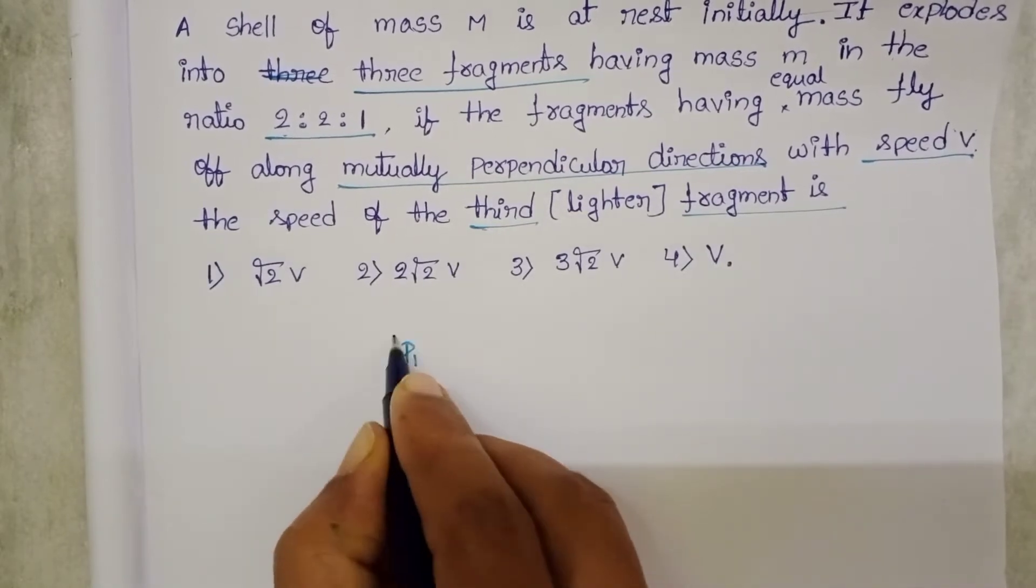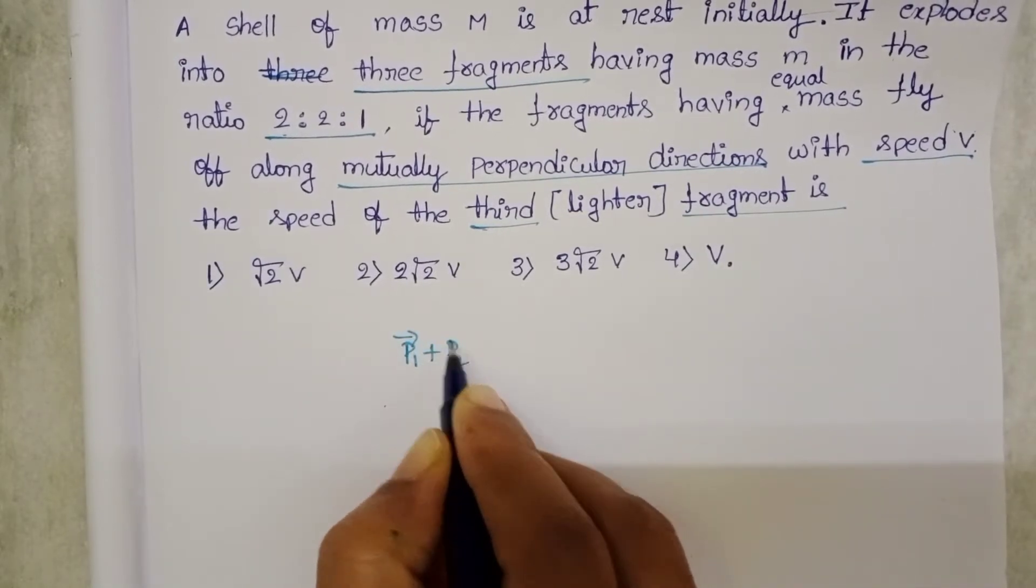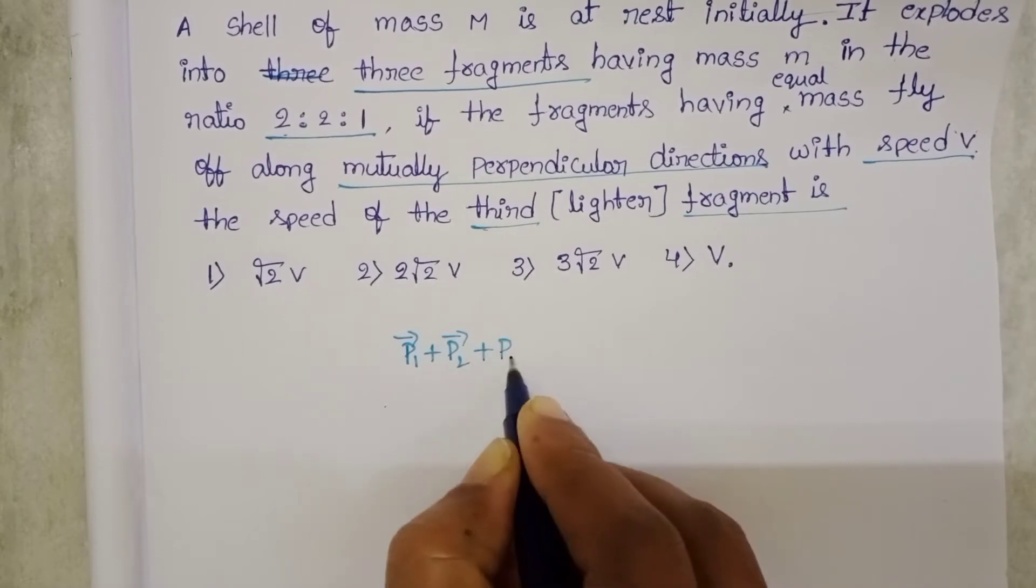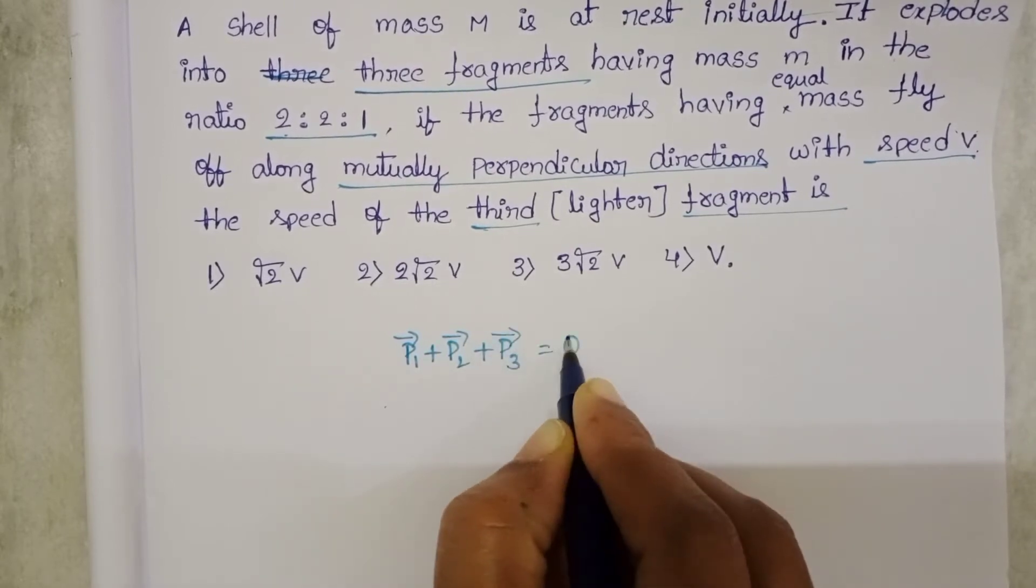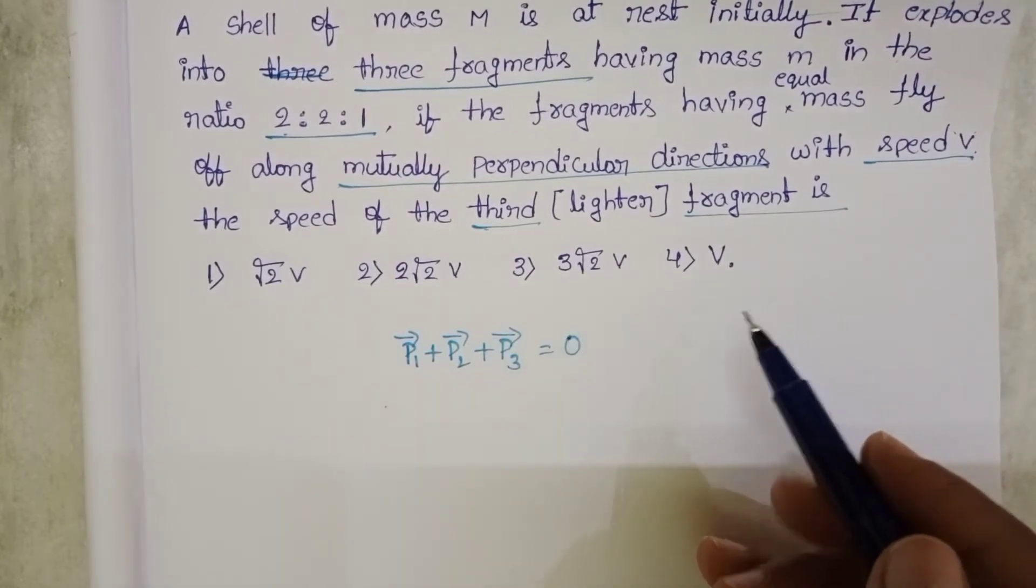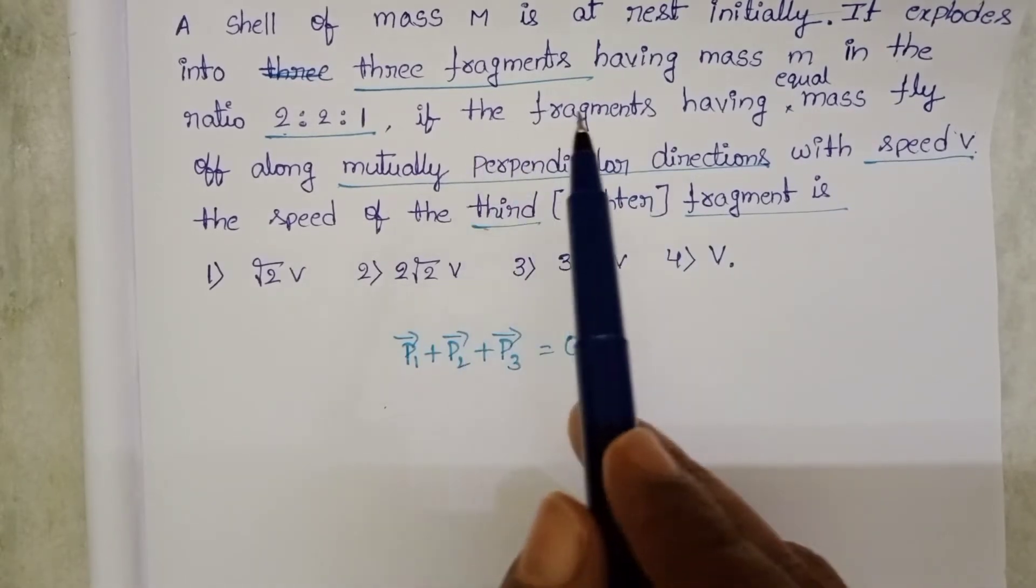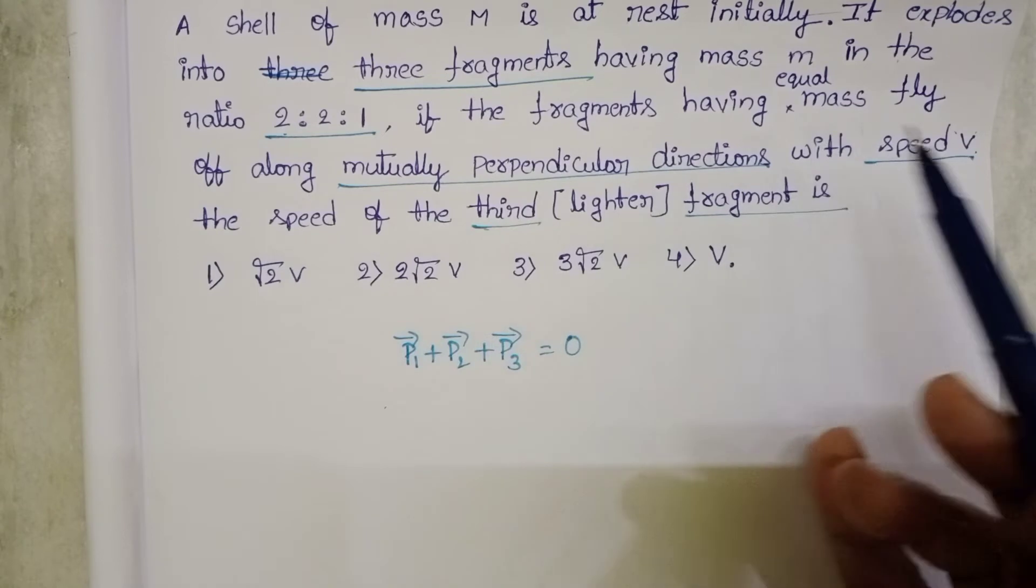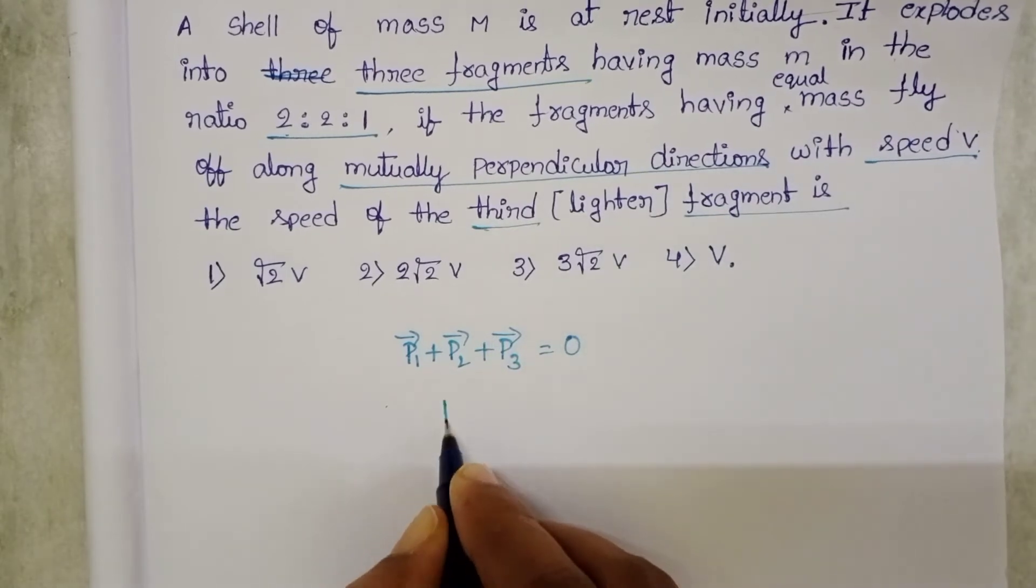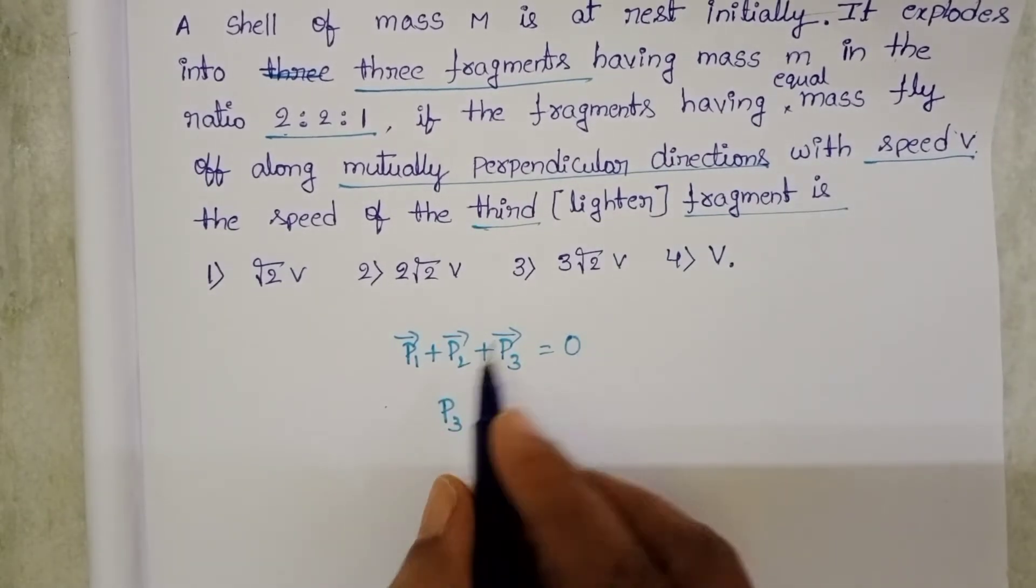So P1 bar plus P2 bar plus P3 bar is equals to 0. And also the given condition, the fragments of equal masses are moving mutually perpendicular directions. We want to find out the speed of the 3rd part.